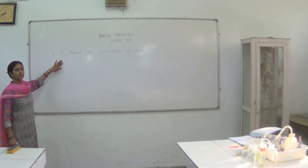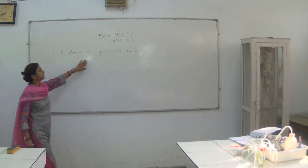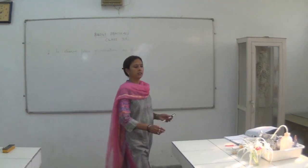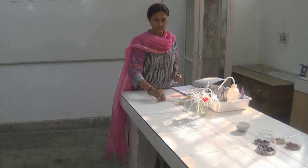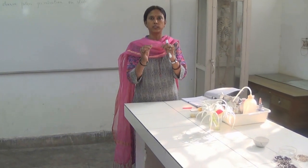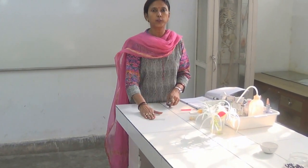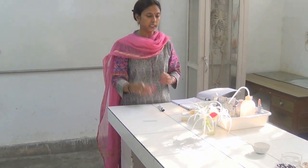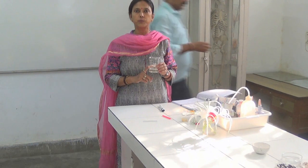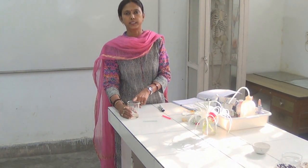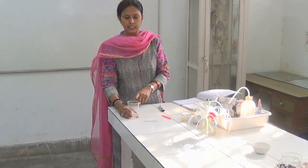The first experiment we are going to discuss today is to observe pollen germination on a slide. We will be using a special slide called a cavity slide, which has a small depression in it. We also need a cover slip and a special nutrient medium which consists of sucrose, calcium nitrate, and boric acid in a proper proportion. This solution will help in the germination of pollen.